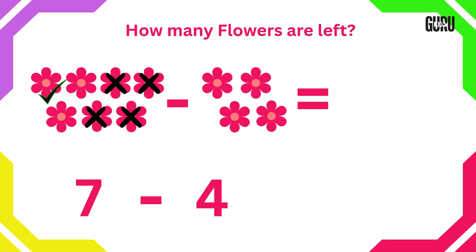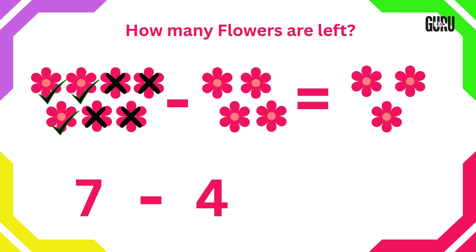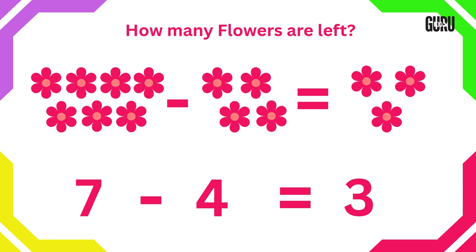1, 2, 3. So 3 flowers are left. Therefore, 7 subtract 4 is 3.